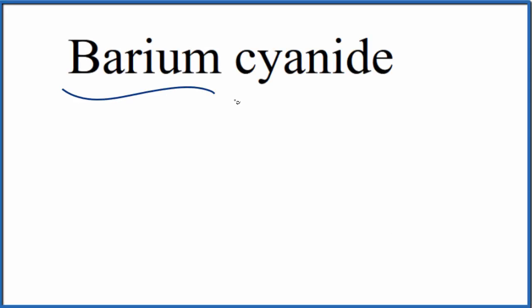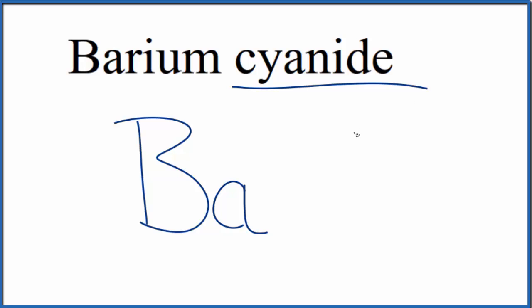To write the formula for barium cyanide, we'll first write the element symbol for barium, that's Ba. Then cyanide - this is one you need to either memorize. The cyanide ion is a polyatomic ion and its formula is CN minus, or if you're allowed, you could look it up on a table of polyatomic ions.